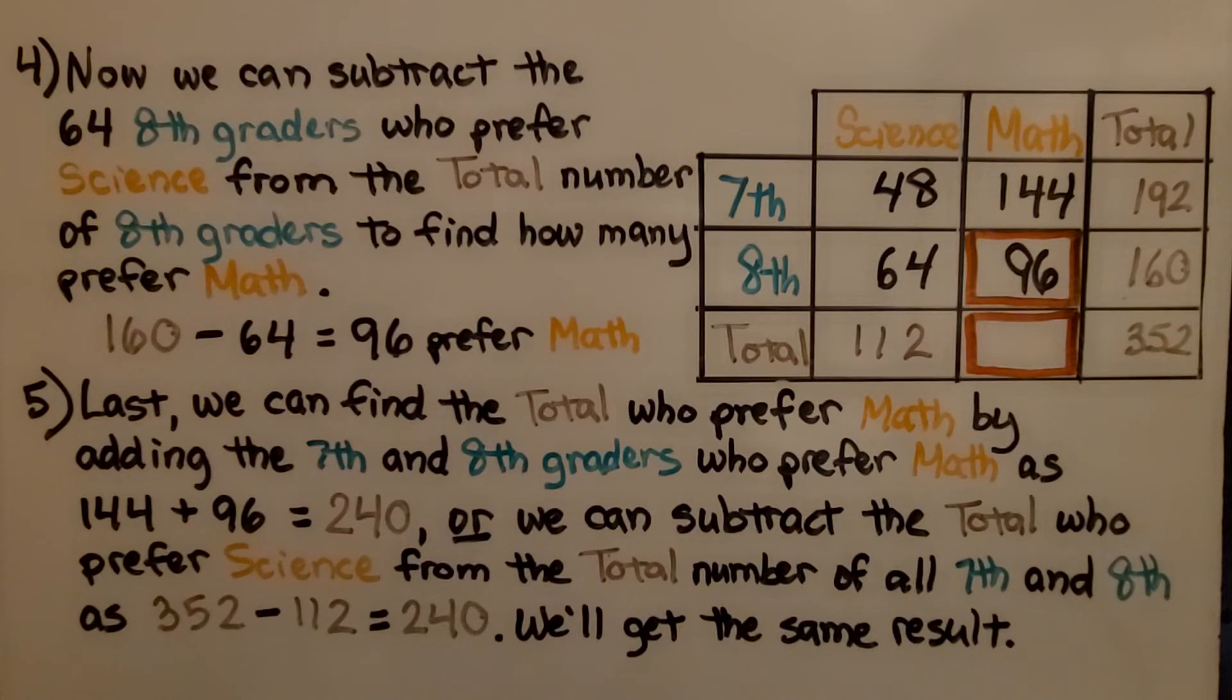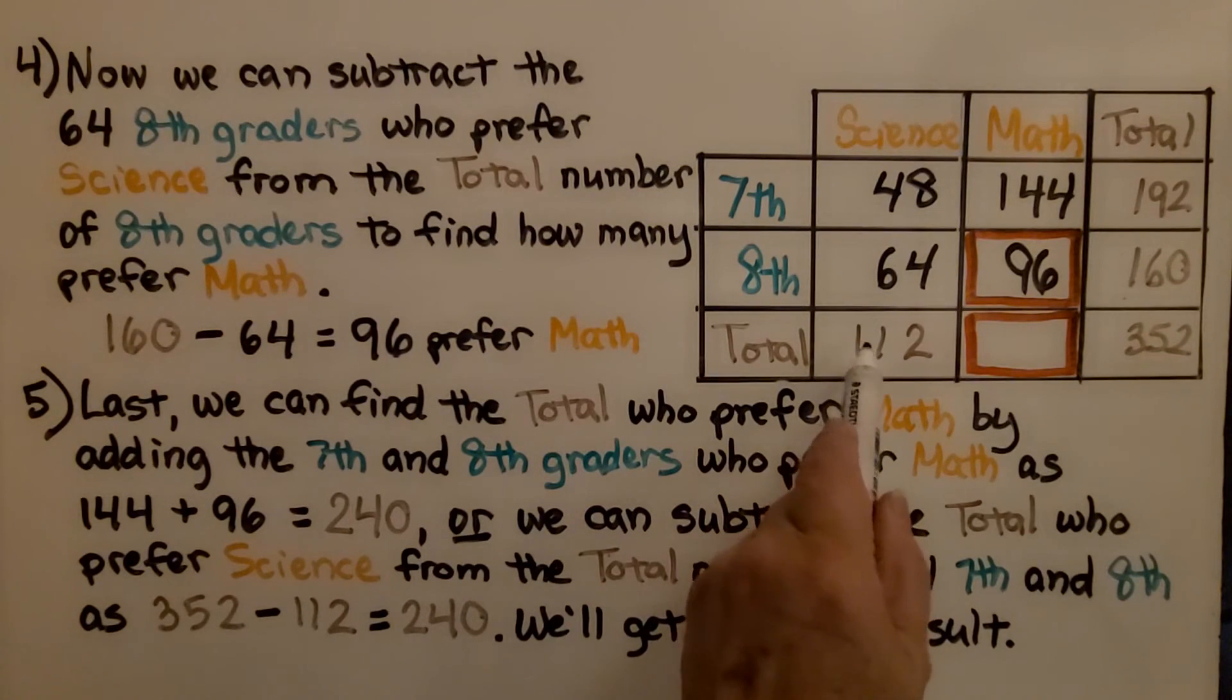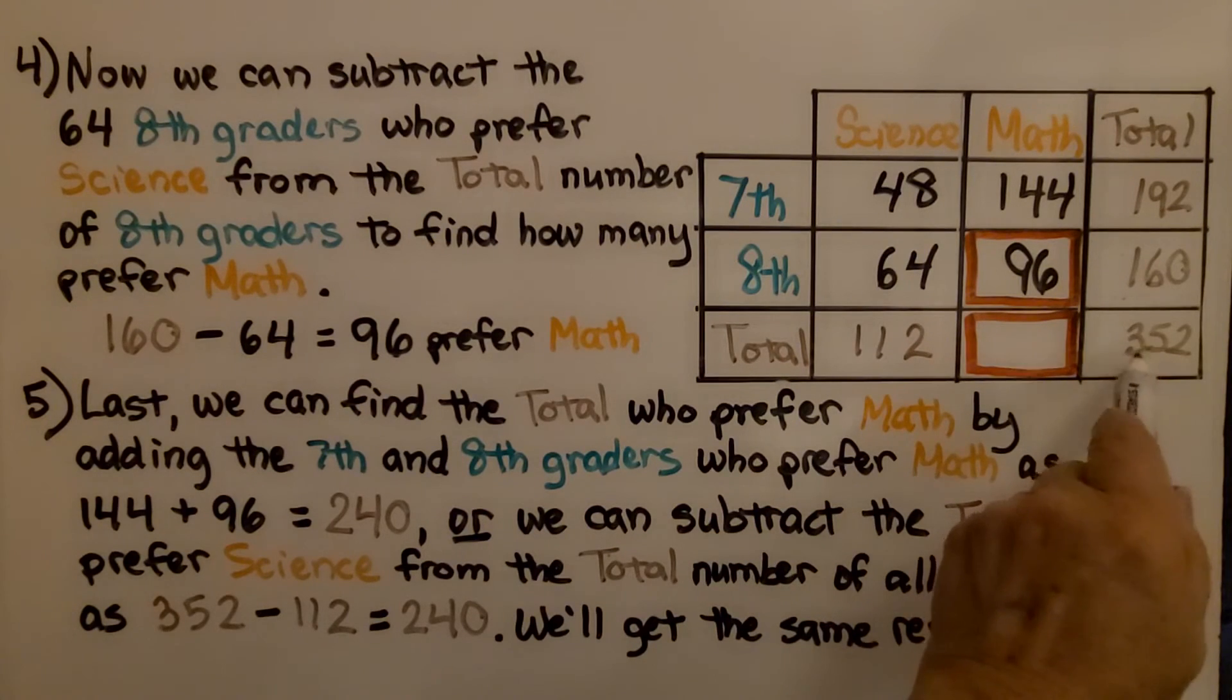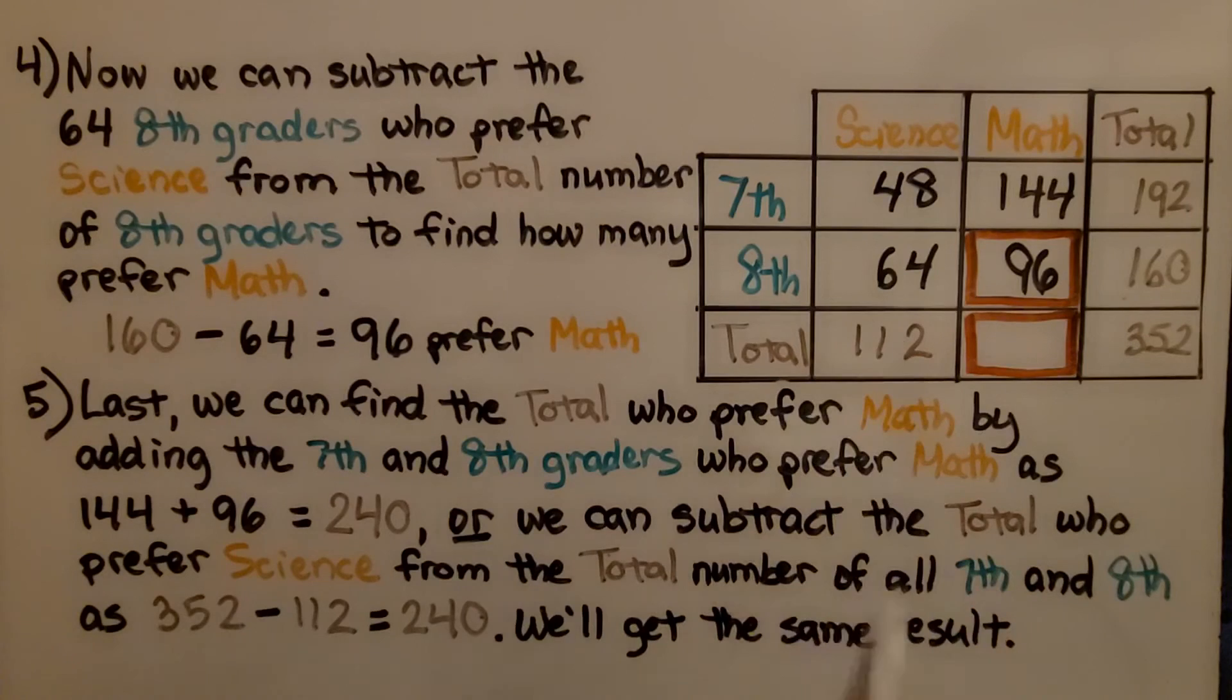Or we could subtract the total who prefer science from the total of all the 7th and 8th grade students together and do 352 minus 112.